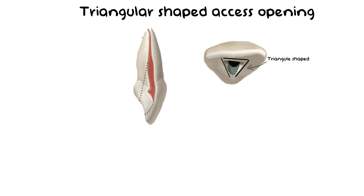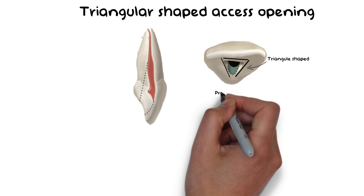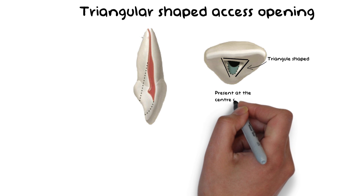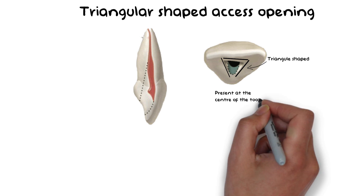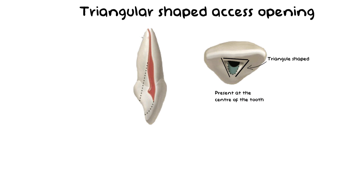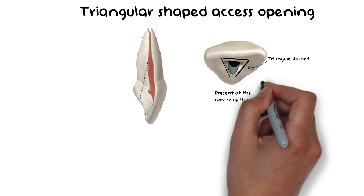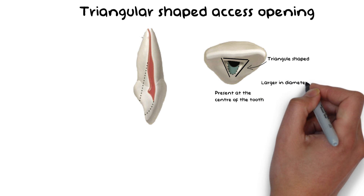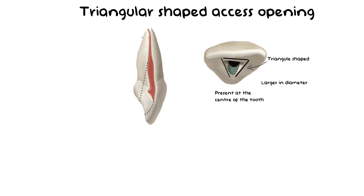As per the rules of endodontics, when a single canal is present in a single root, it will be centered in that single root. Hence, the single canal is present directly at the center of the root and is larger in diameter as compared to a tooth such as molars having multiple canals.